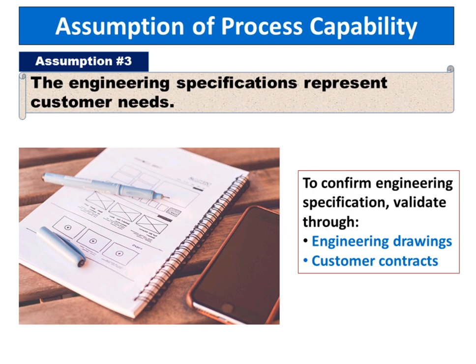The third assumption is that the engineering specifications represent customer needs. To confirm engineering specifications, validate through engineering drawings and customer contracts.